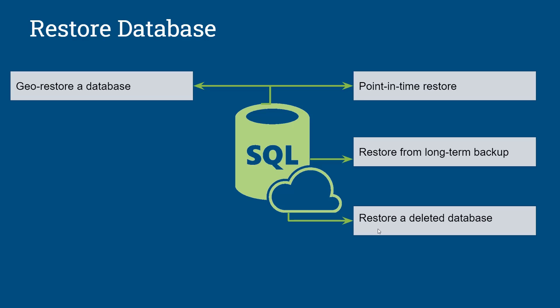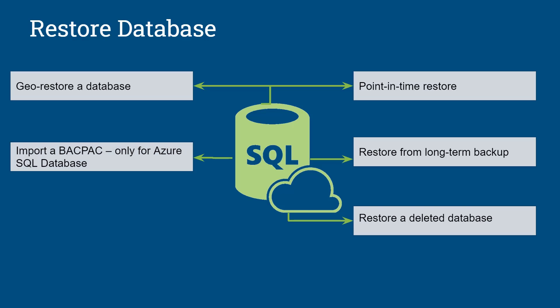The fourth option is Geo restore. Geo restore is very important because there are certain cases where your database or your data center are inaccessible. At that time, you can request a Geo restore and restore your database in any Azure region. And the fifth option is from a BACPAC file — this option is available in Azure SQL Database. In the demo section, we are going to implement each and every restore option.